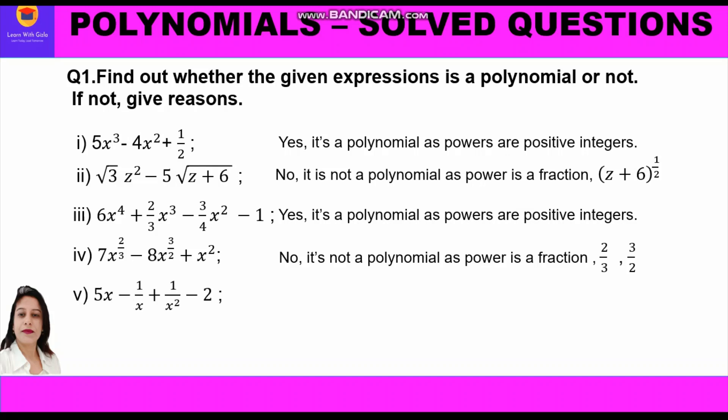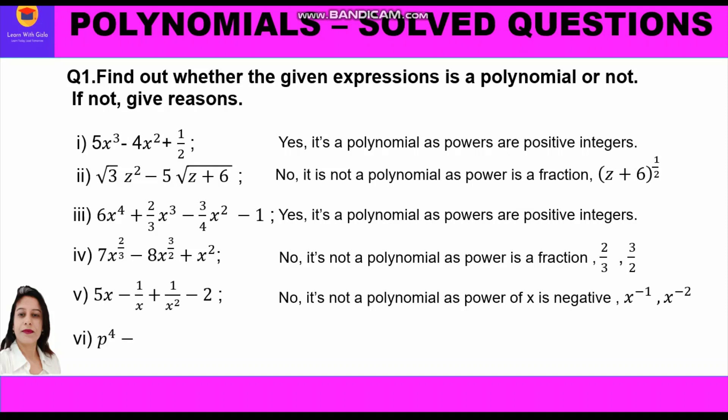Part 5: 5x − 1/x + 1/x² − 2. This is also not a polynomial because the powers of x are negative — we have x raised to power −1 and x raised to power −2, so it is not a polynomial.